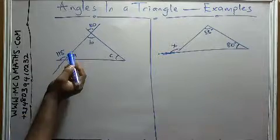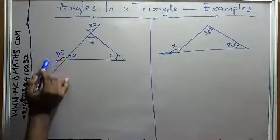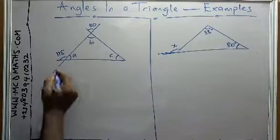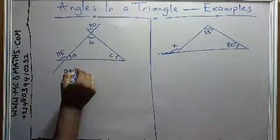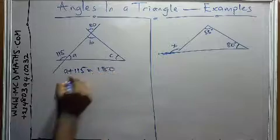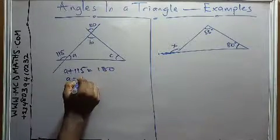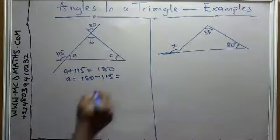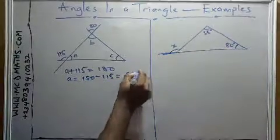To get A, of course, if you look at it, it's a straight line, and this means A plus 115 is equal to 180. So it implies that A will give you 180 minus 115, and of course, that's going to give you 65 degree.